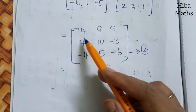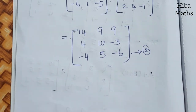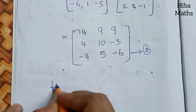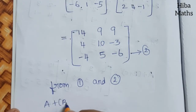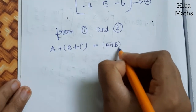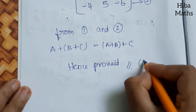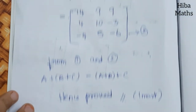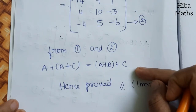Now we compare result 1 and result 2. Both give [14,9,9; 4,10,-3; -4,5,-6]. From 1 and 2, A + (B + C) = (A + B) + C.